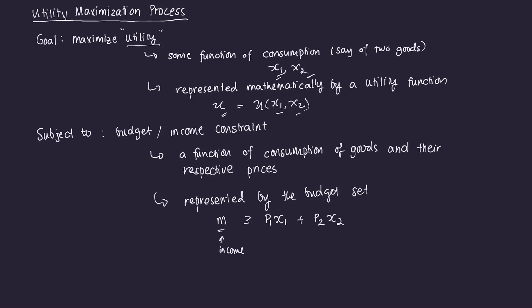M is income, and it should be greater than or equal to P1 times X1 plus P2 times X2. P1 is the price of good one, and P2 is the price of good two, with their prices determined by the market. P1 times X1 is the total amount spent on good one, and P2 times X2 is the total amount spent on good two.